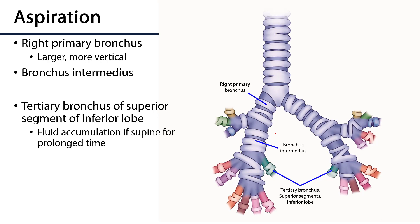In terms of aspiration risks — aspiration is whenever a substance other than air is brought into the tracheobronchial tree — most aspirated substances are going to follow the right primary bronchus because it is larger and more linear with the trachea, as opposed to the smaller and more oblique left primary bronchus. The major pathway will be to the right, and then substances typically continue down through the bronchus intermedius, where they often end up stuck, depending on their size.